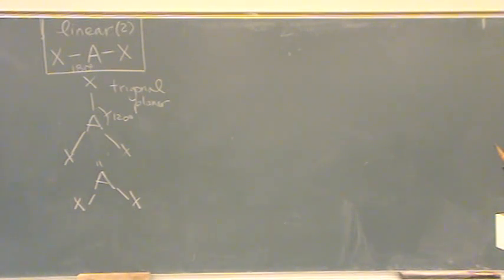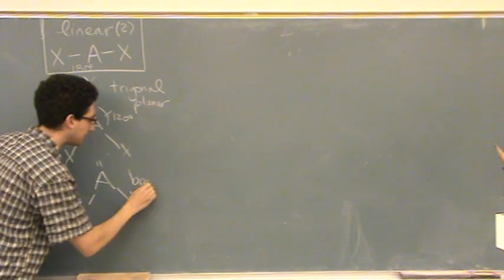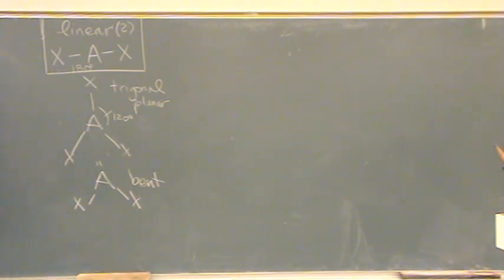I just happen to take off the top one. And this would still be trigonal planar, the electronic shape, but the geometric shape would now be bent. So still electronic shape or electron geometry is trigonal planar, but it's a bent molecular and the bond angle still the same, 120.